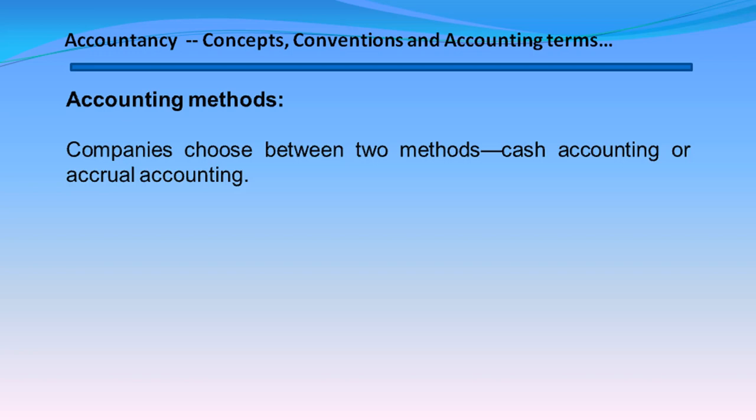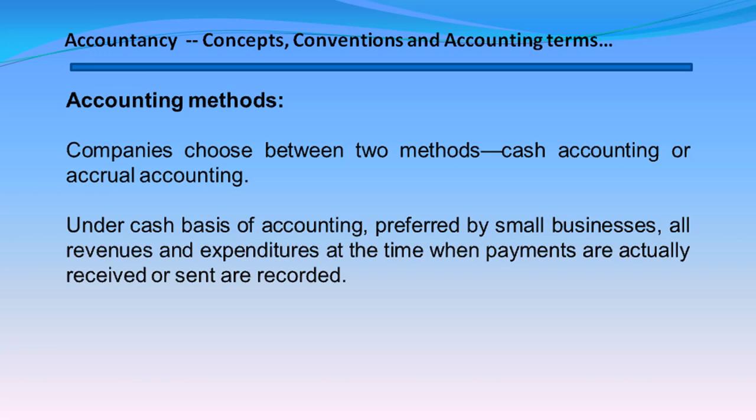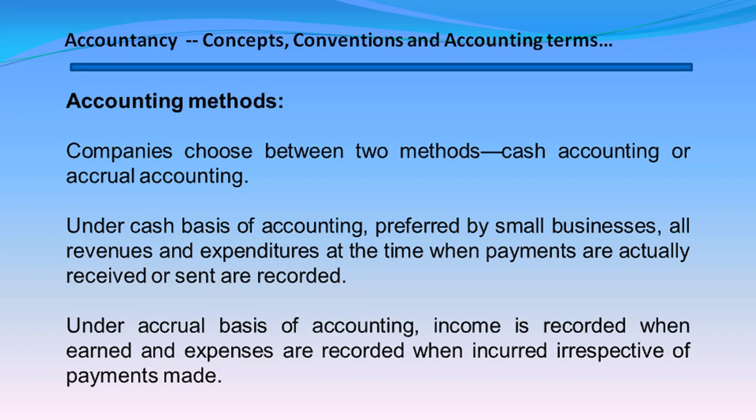Accounting Methods. Companies choose between two methods: cash accounting or accrual accounting. Under the cash basis of accounting, preferred by small businesses, all revenues and expenditures are recorded at the time when payments are actually received or sent. Under the accrual basis of accounting, income is recorded when earned and expenses are recorded when incurred, irrespective of payments made.